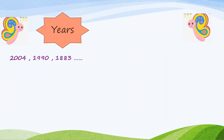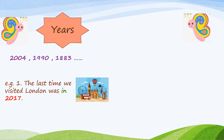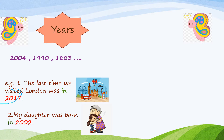We also put 'in' before years, such as 2004, 1990, 1883, and so on. For example, the last time we visited London was in 2017. Here we have 2017 — it's a year, so we have to put 'in' before it. Second example: my daughter was born in 2002. Here we have 2002 — it's a year, so we have to put 'in' before it.